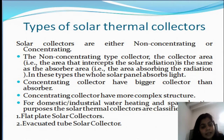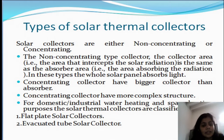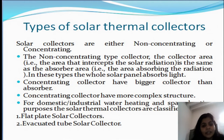Whereas in the concentrating type of solar collector, they have a bigger collector area as compared to absorber area. Concentrating collectors are basically more complex structures. When we talk of domestic or industrial water heating, solar thermal collectors can be further classified based upon the shape of the collectors into two types: either flat plate or evacuated type of solar collectors.